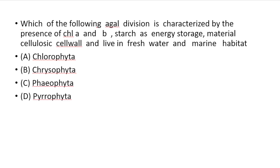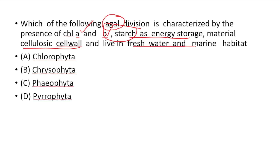Which of the following algal divisions is characterized by the presence of chlorophyll A and chlorophyll B, starch as energy storage material, cellulosic cell wall, and lives in fresh water and marine habitat?